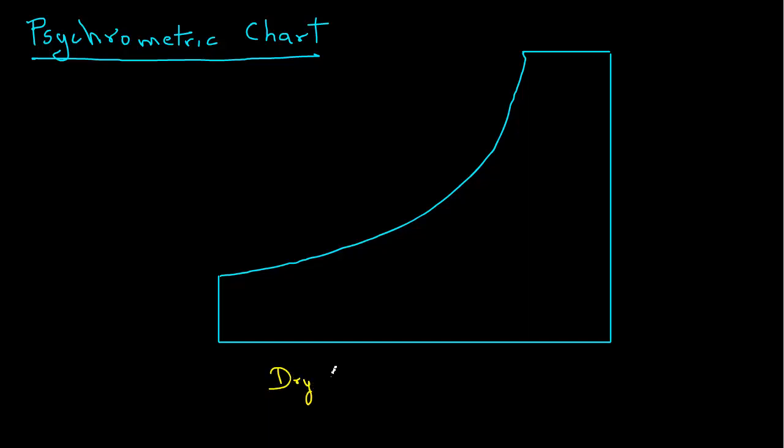We will label the x-axis as dry bulb temperature, which will be in degrees Celsius. And we will put some values 20, 30, 40, and so on, 90 degrees Celsius. And then we draw vertical lines that originate from these values.